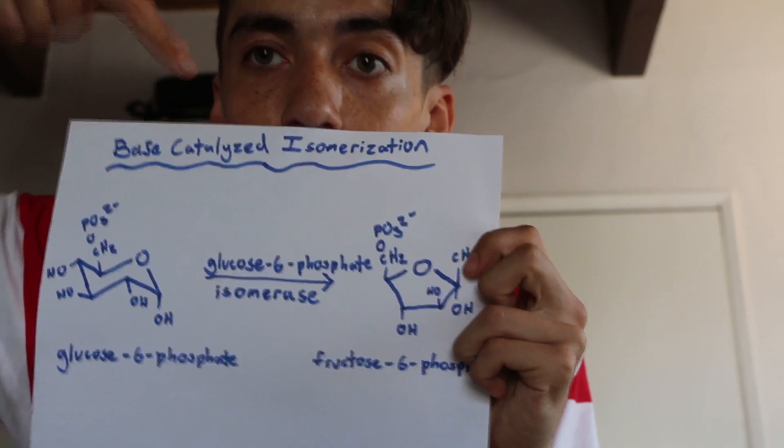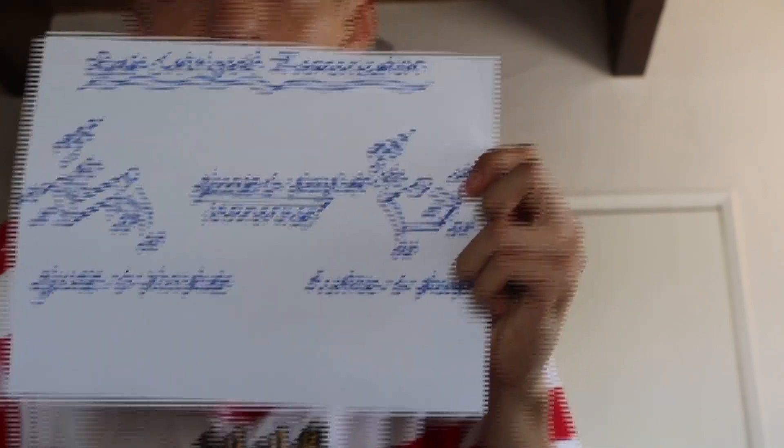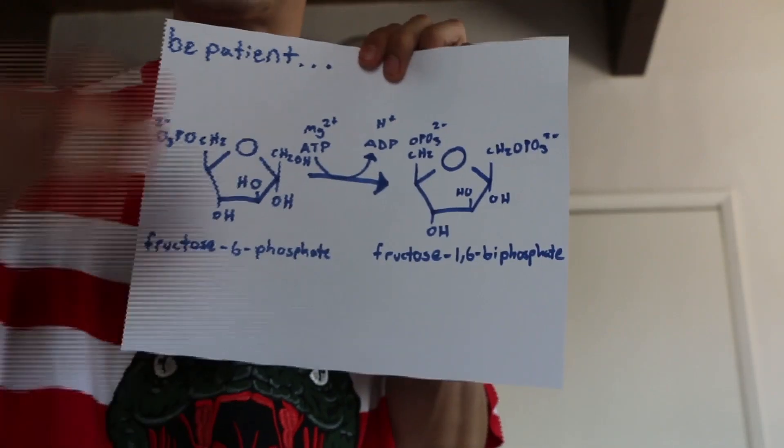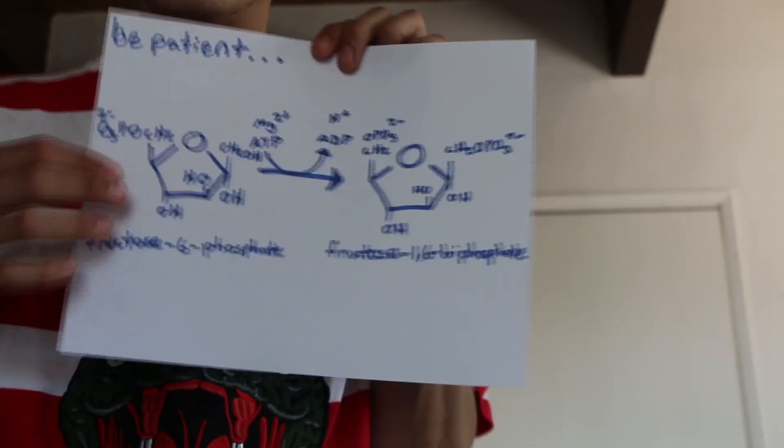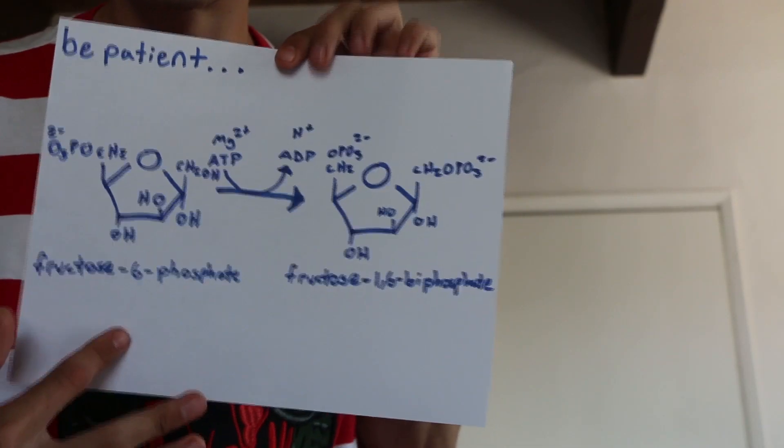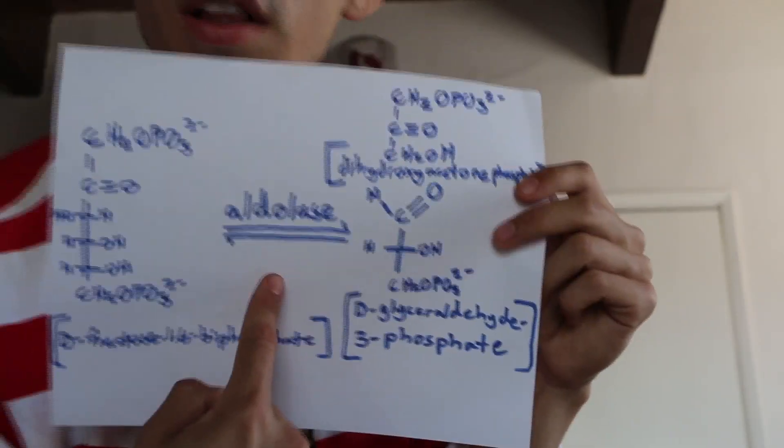That's isomerization. Then invest one more ATP, you gotta be patient. Fructose-1,6-bisphosphate, take it. Enzymatic aldolase will break it.